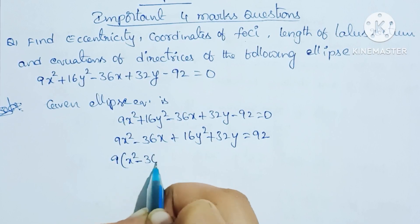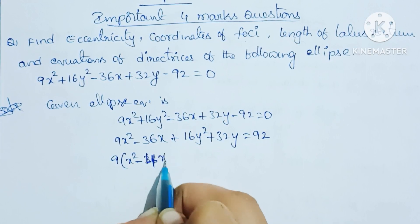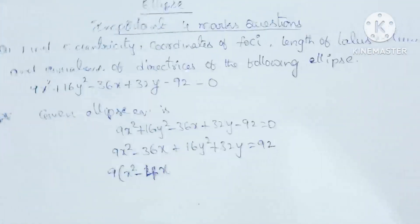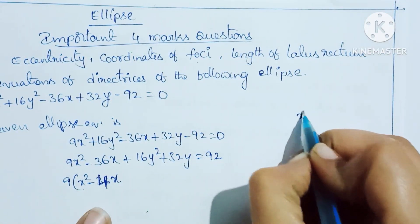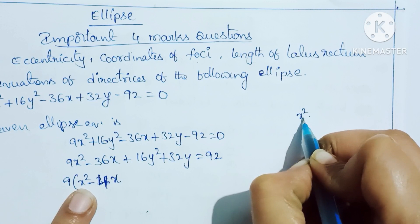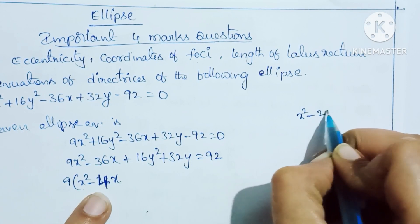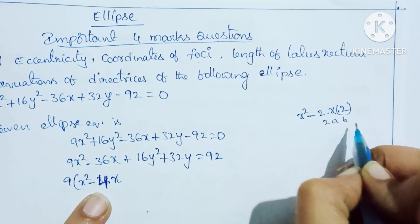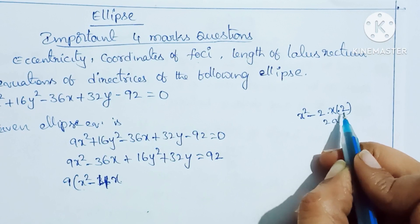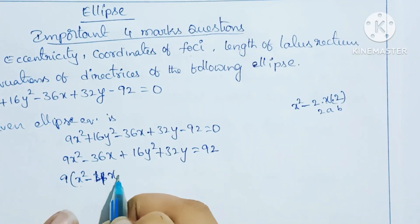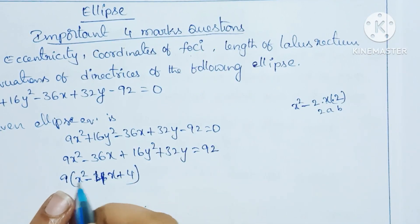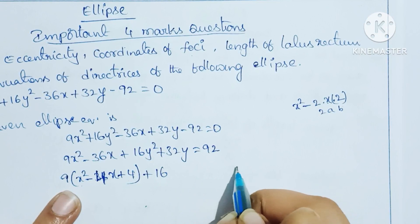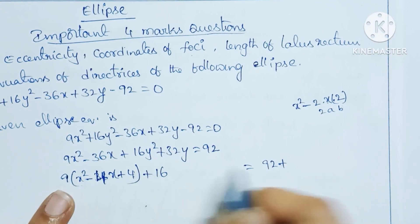Completing the square for the x-terms: 9(x² - 4x). Using the identity (a - b)² = a² - 2ab + b², here a = x and b = 2, so b² = 4. Multiplying: 9 × 4 = 36, which is added to the right-hand side, giving 92 + 36.